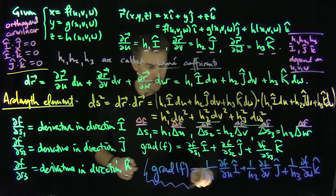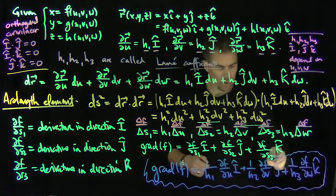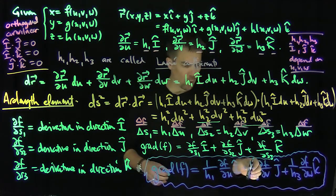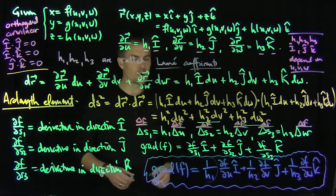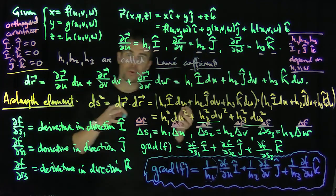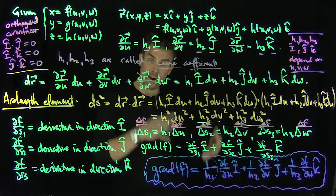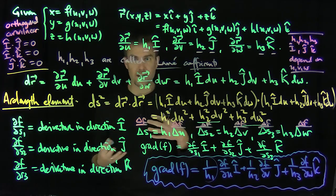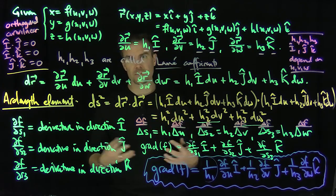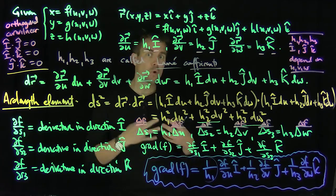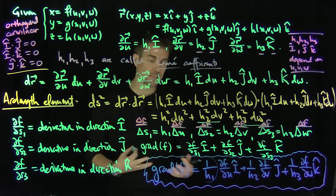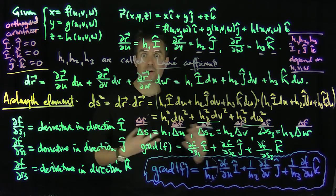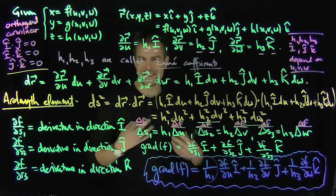In further videos, we're going to examine these Lamé coefficients in different coordinate frames and see how we can use this formulation of the gradient — along with vector operations like divergence and curl — to find vector identities in curvilinear coordinates. These appear often in electromagnetism and quantum mechanics, where we need spherical or cylindrical symmetry and want to write differential operators in those coordinate systems to make our calculus and partial differential equations easier to manage. Thank you very much.